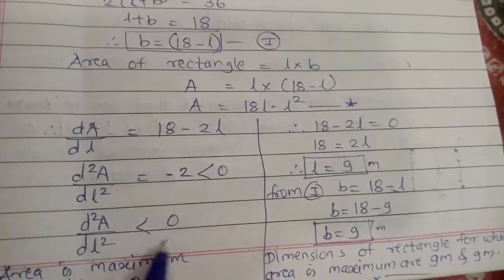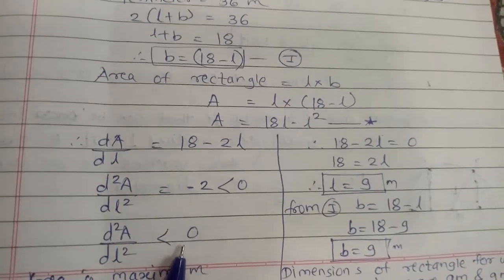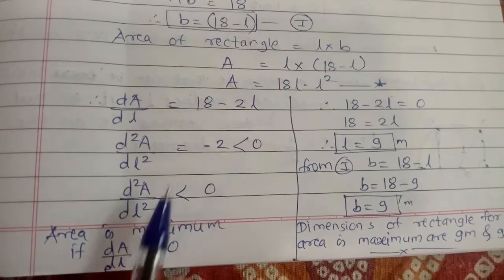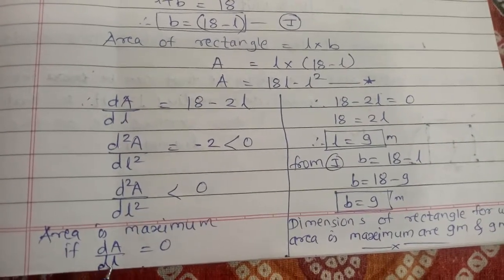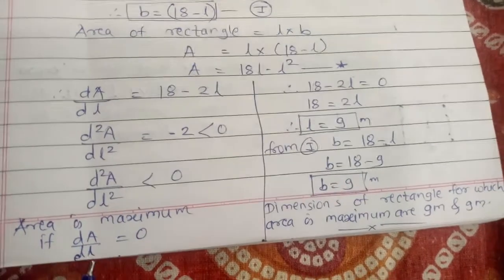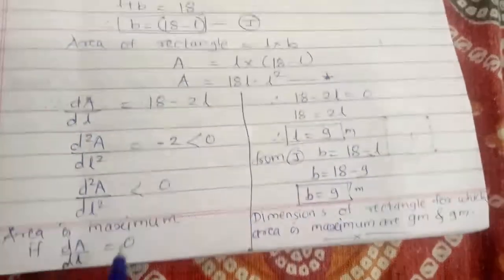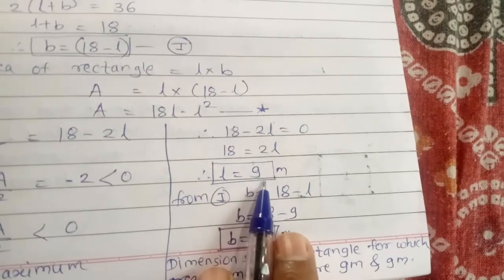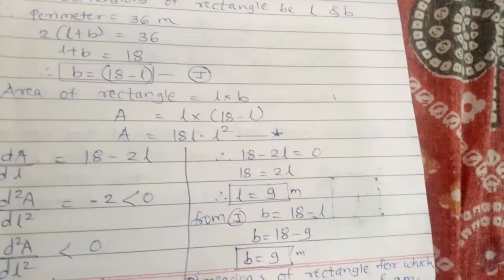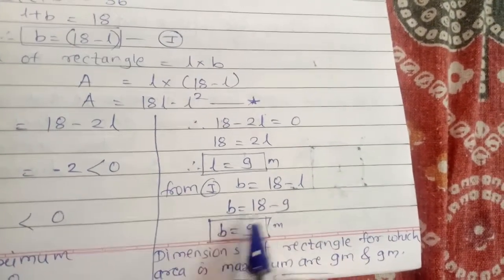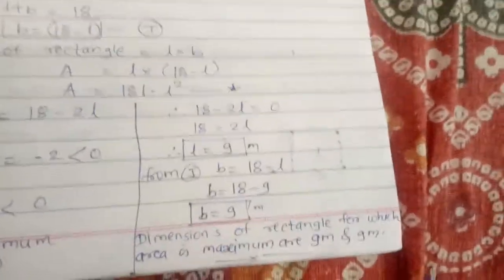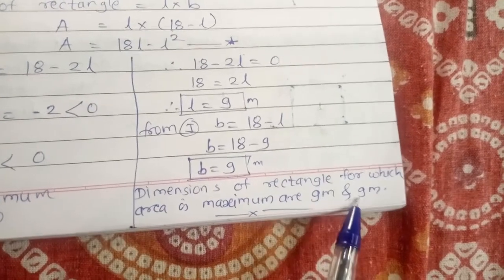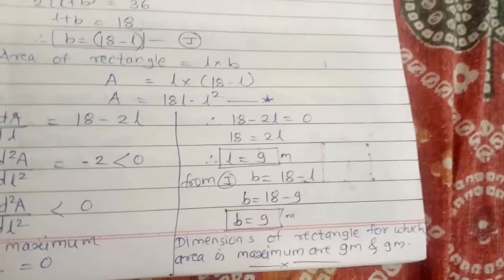Since the second order derivative is less than zero, the function is maximum. Setting the first order derivative equal to zero: 18 − 2l = 0, so l = 9. From equation one, b = 18 − 9 = 9. So the dimensions of the rectangle for which the area is maximum are length = 9 meters and breadth = 9 meters. This means it is actually a square, not a rectangle.